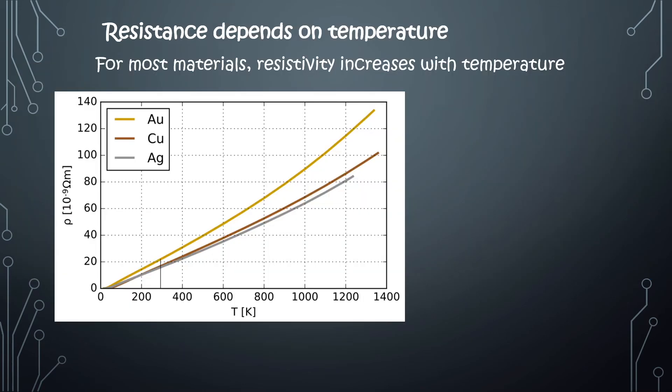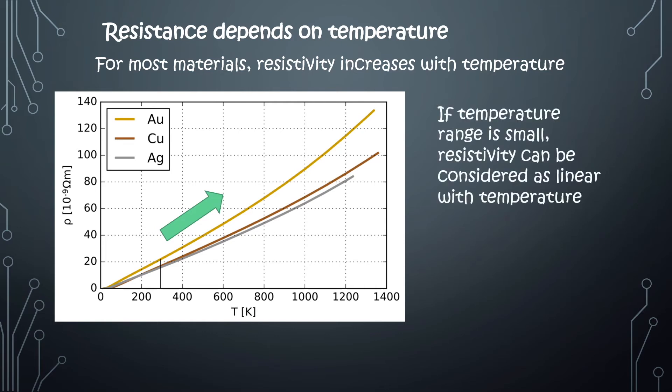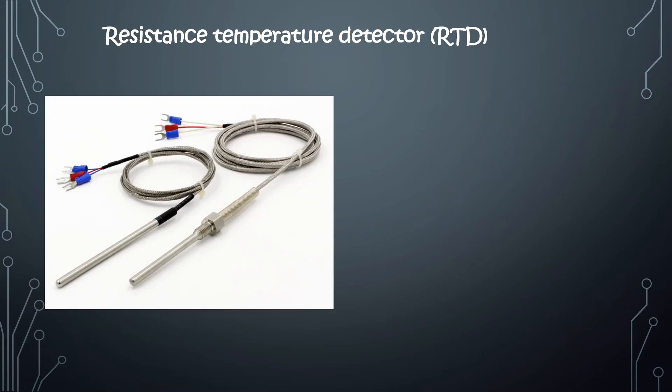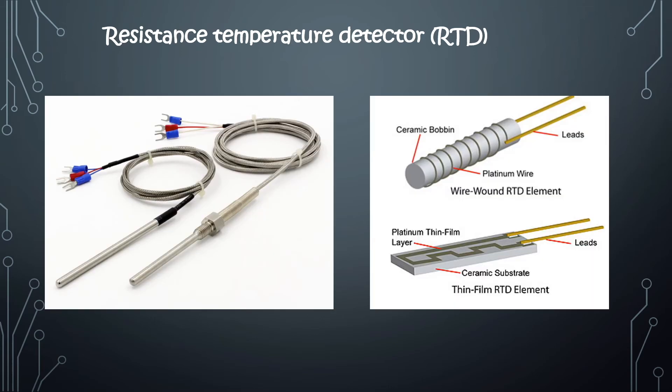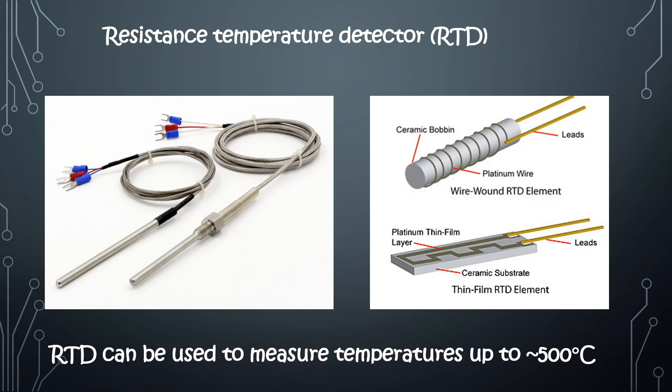In general, resistance of a material is a function of temperature. For most materials, resistivity increases with temperature. If the temperature range is small, resistivity can be considered as linear with temperature. We can find in the market thermometers known as resistance temperature detectors, or RTD, that use this phenomenon to measure temperature up to about 500 degrees Celsius.